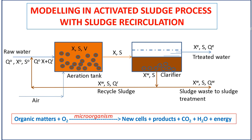In the aeration tank, which previously developed aerobic microbes, microbes with the help of oxygen from the air will utilize the substrate from wastewater to meet metabolic needs in microbial cells. Therefore, the substrate concentration will decrease from S0 to S, and the microbial concentration will increase from X0 to X.